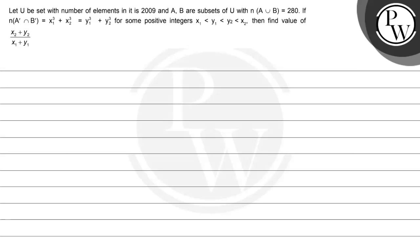Hello, let's see this question. The question says: let U be the set with number of elements 2009, and A, B are subsets of U with n(A∪B) equal to 280. If n(A'∩B') equals x1^q + x2^q = y1^q + y2^q for some positive integers x1 < y1 < y2 < x2, then find the value of (x2 + y2) divided by (x1 + y1).